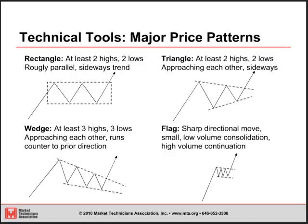Going through those four types — a rectangle: you're looking at at least two highs and at least two lows. It's going to be roughly parallel in a sideways trend. In this case, we're in an uptrend, trading sideways, one and two highs, two lows around the same area. Then it breaks out through those highs and you're looking at a continuation of the preceding trend.